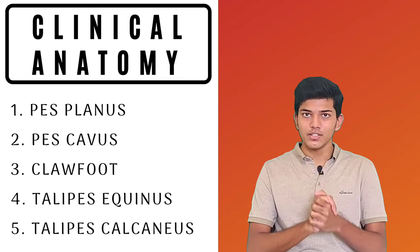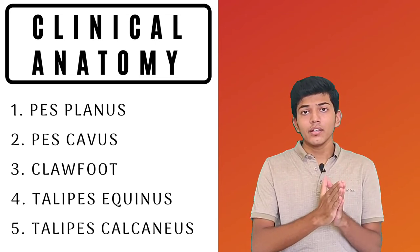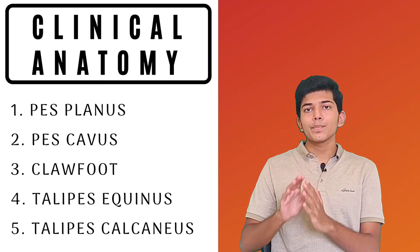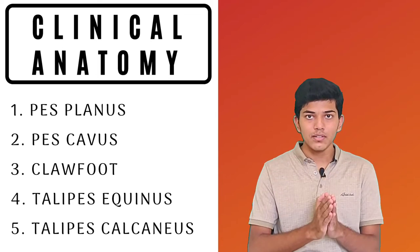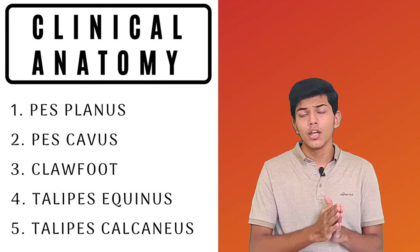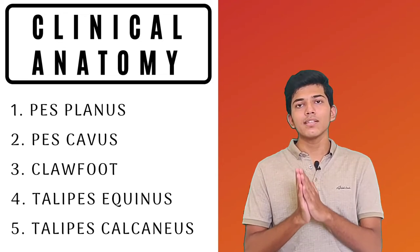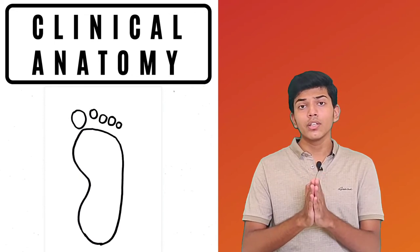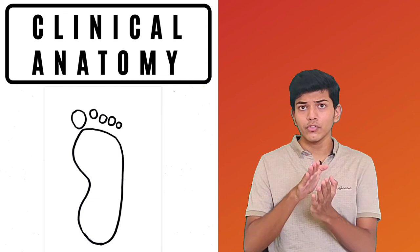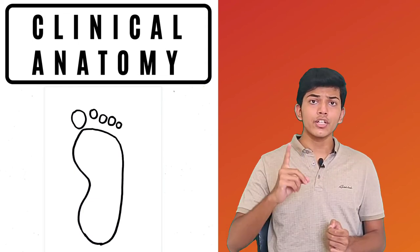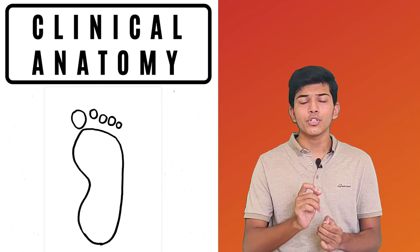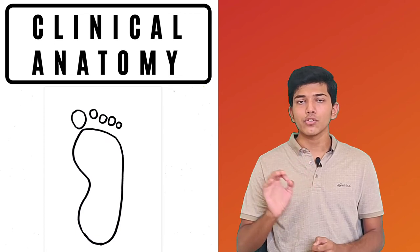Now talking about the clinical anatomy of the arches of the foot. There can be two cases: either absence of arches, leading to flat foot — a condition known as pes planus — or over-expression and exaggeration of arches, leading to a condition known as pes cavus. In pes planus or flat foot, there can be compression of nerves and vessels. The foot becomes more prone to trauma and osteoarthritis, and shock absorption during running, walking, and jumping will not occur efficiently.